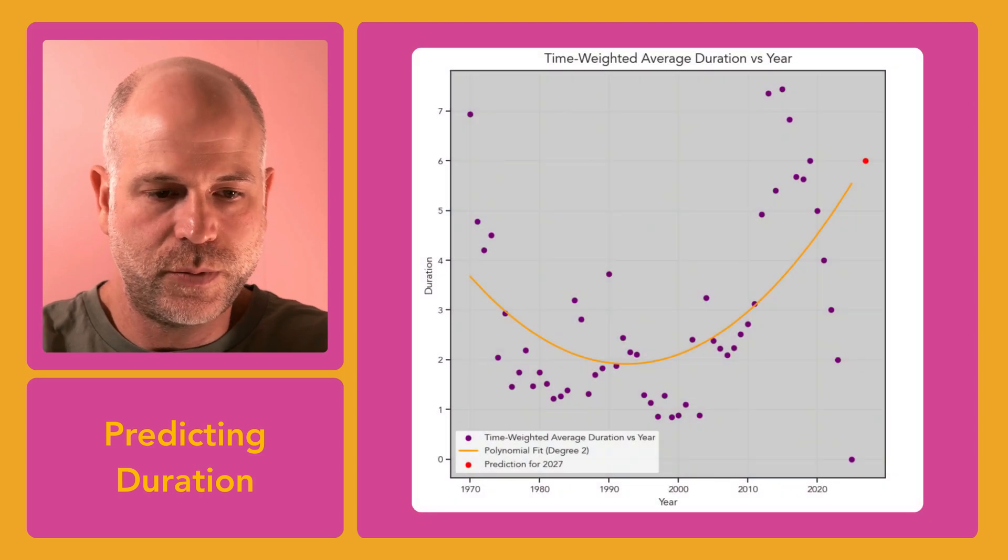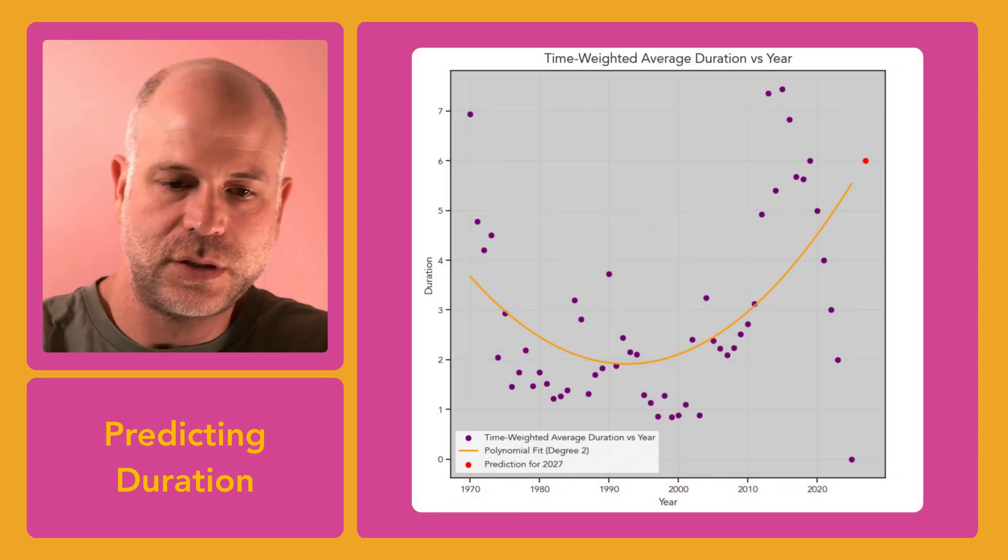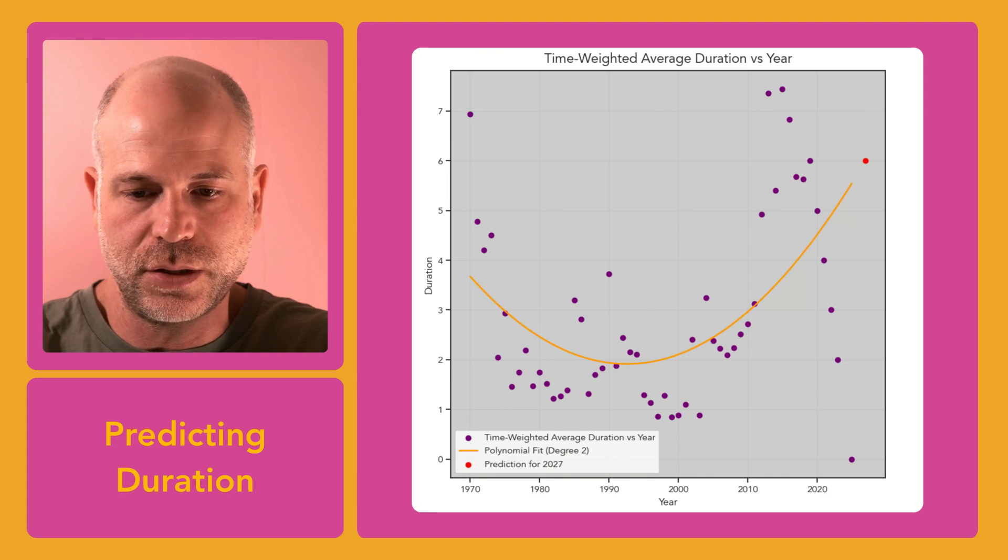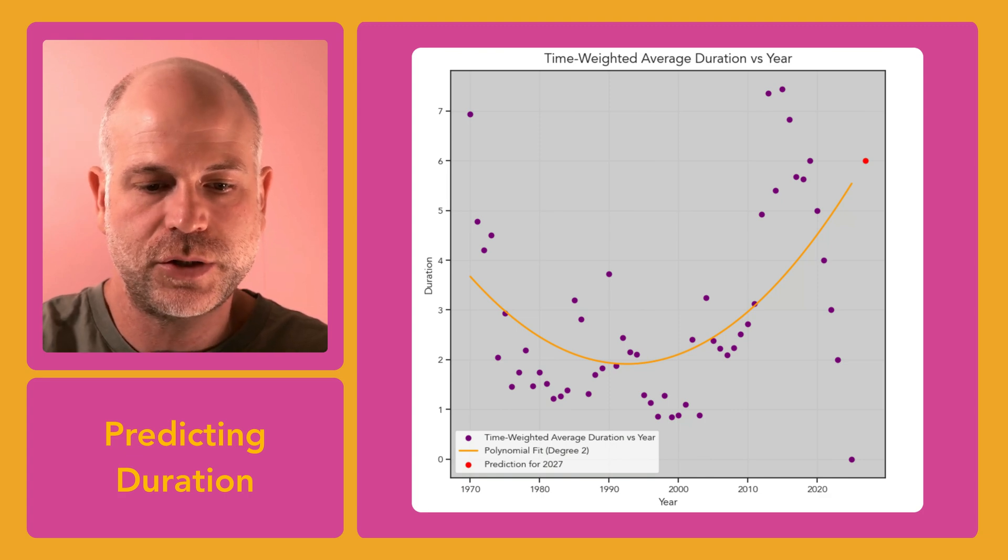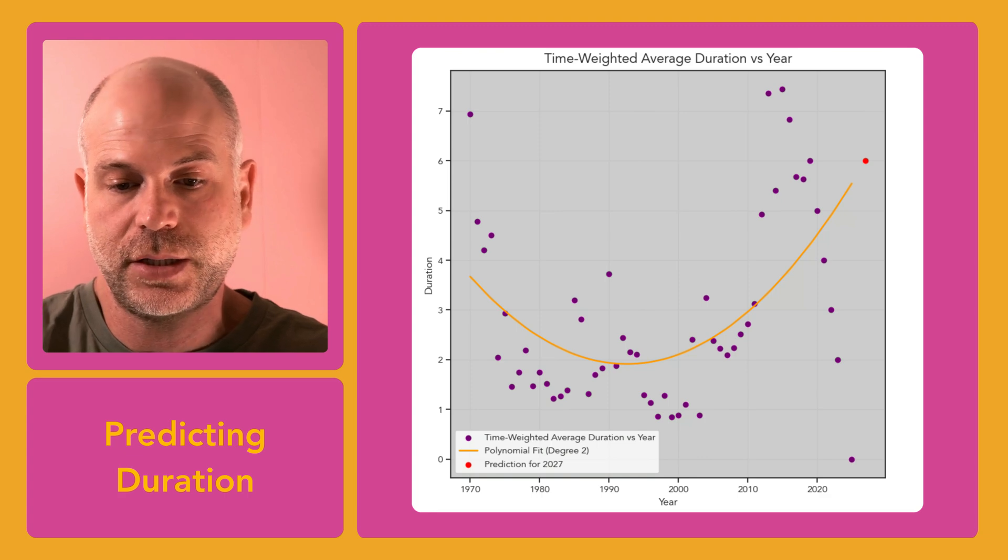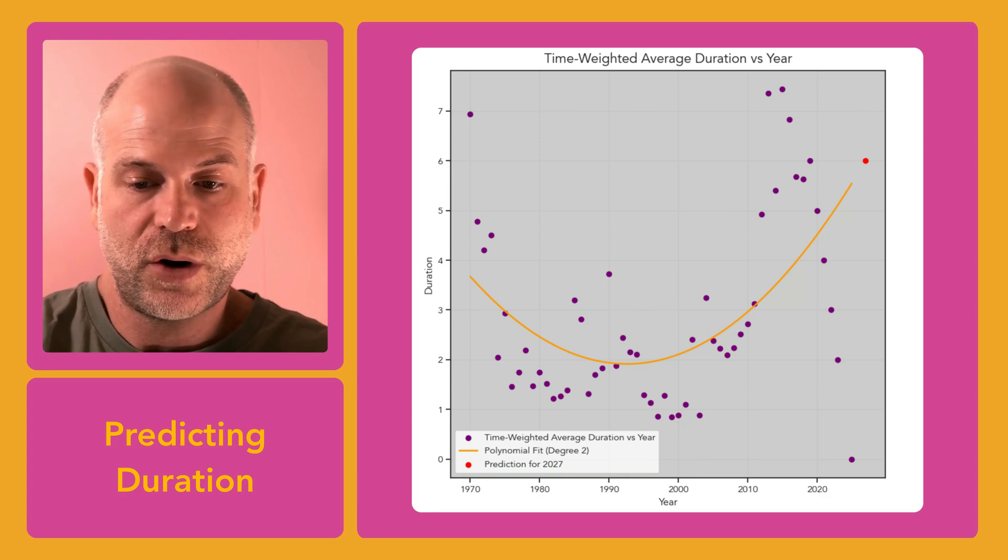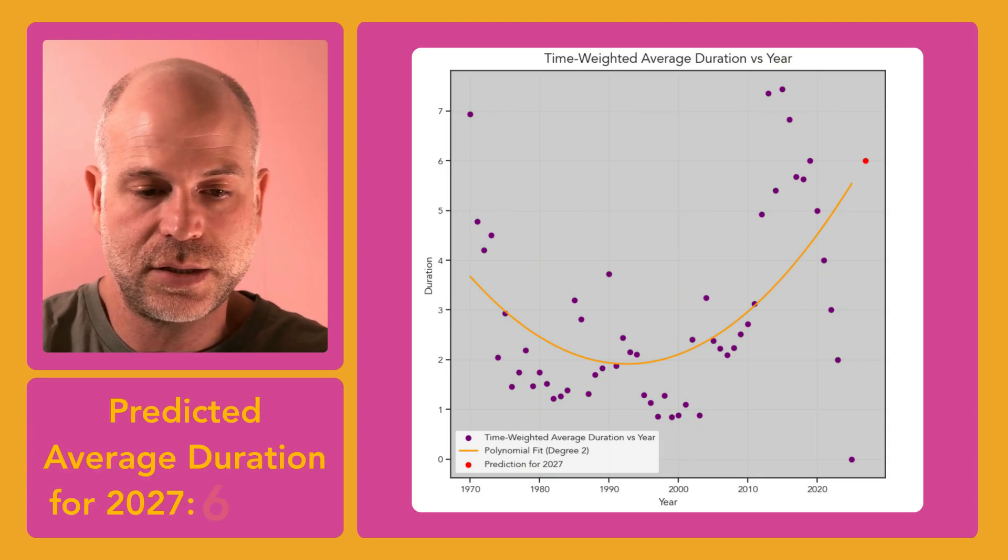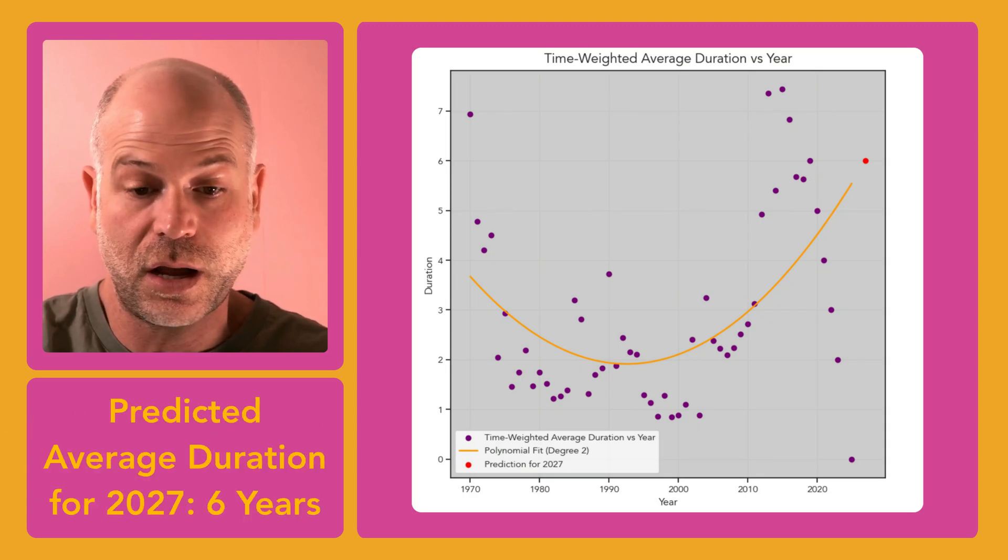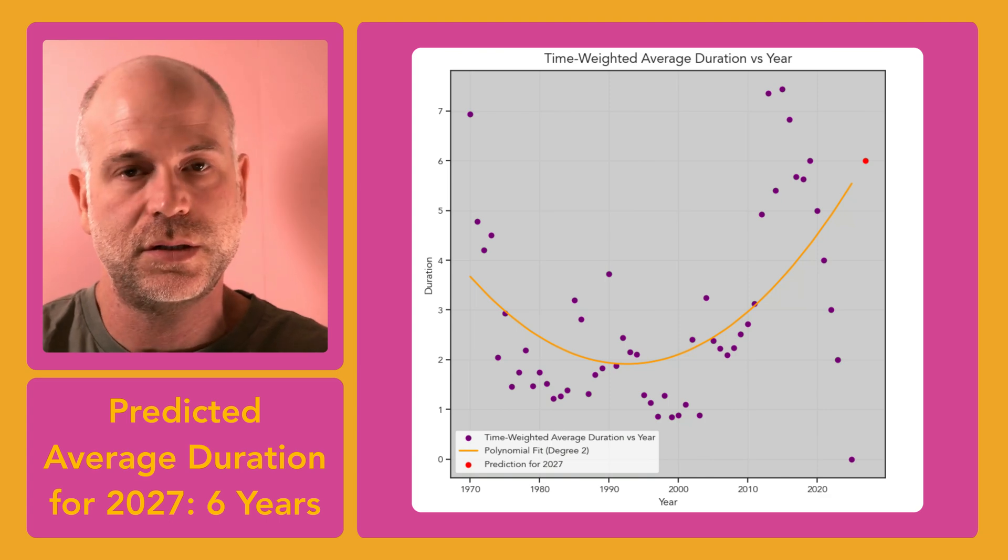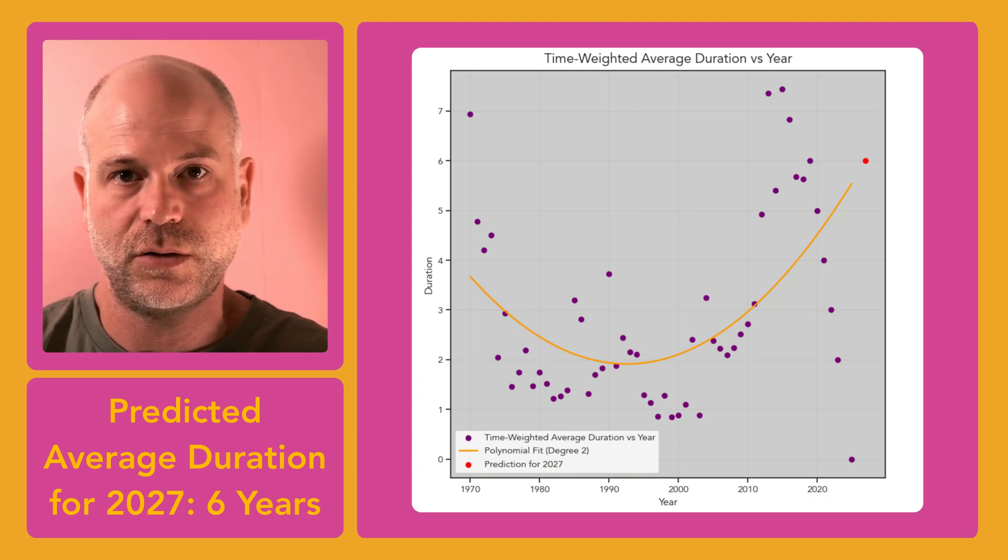I went with polynomial regression because I've noticed that the relationship between the production years of synths and the average duration is not linear. I used this model to predict the average duration for 2020, to check if the model was performing as expected, and as shown in the graph below, the prediction was fairly accurate. Based on this analysis, I made a prediction that the average shelf-life of a synth in 2027 would be 6 years. And I guess we'll have to find out if I'm right.